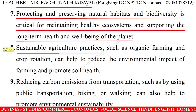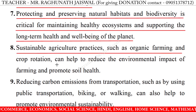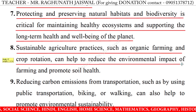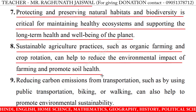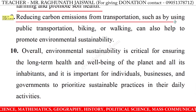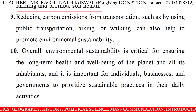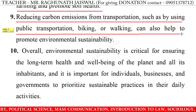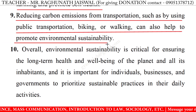8. Sustainable agriculture practices such as organic farming and crop rotation can help reduce the environmental impact of farming and promote soil health. 9. Reducing carbon emissions from transportation, such as by using public transportation, biking, or walking, can also help to promote environmental sustainability.